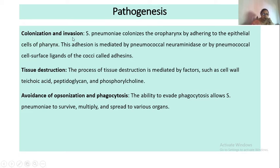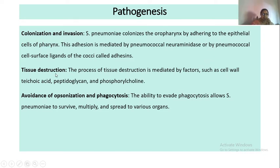Regarding pathogenesis, it is categorized into three steps. First, colonization and invasion: Streptococcus pneumoniae colonizes by attaching to the oropharynx or epithelial cells of the pharynx with the help of adhesins. Second, tissue destruction: once attached, with the help of cell wall components like teichoic acid, peptidoglycan, and phosphorylcholine, they start the destruction of tissue.